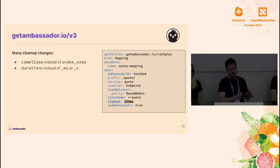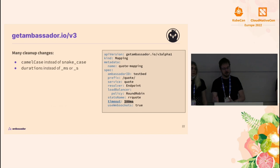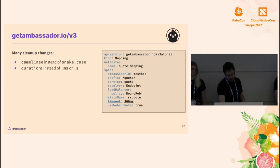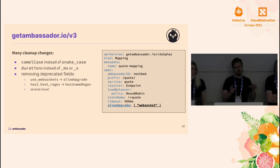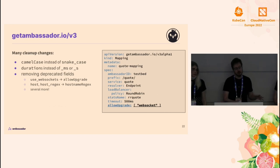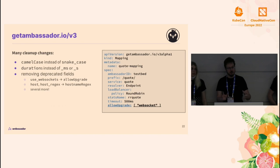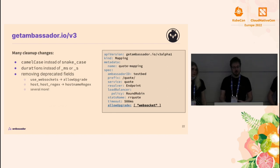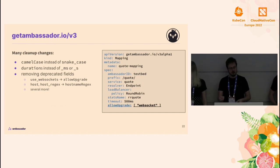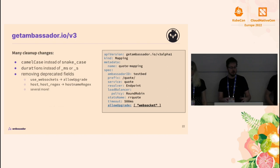We also have a bunch of fields that were like timeout_ms with an integer number of milliseconds — we're transitioning those to be duration types, again for internal consistency and consistency with everything else in Kubernetes. And where we had a field we wanted to deprecate and replace with something else, we'd been supporting both options; now we're getting rid of the older ones. For example, we used to have useWebSockets, which we replaced with allow_upgrade, which is more capable and flexible, and in v3 we're removing useWebSockets. Similarly, we're consolidating the clunky host and hostRegex fields and adding support for DNS globs.